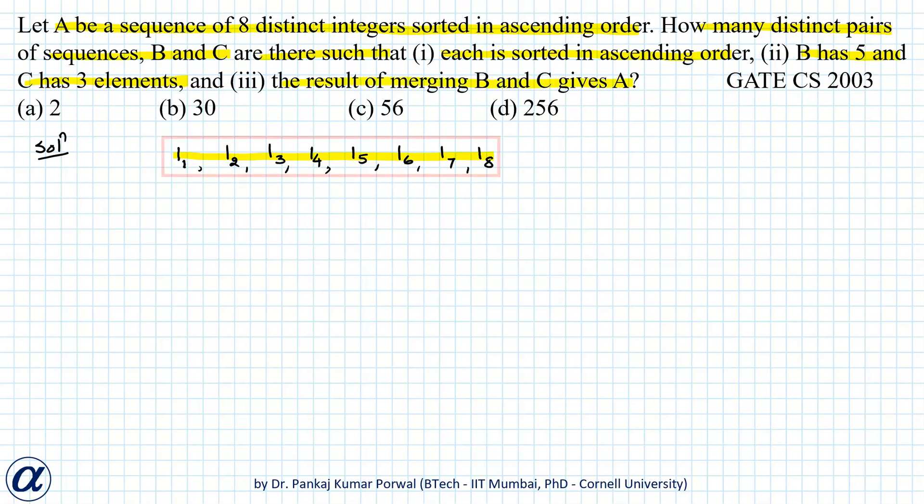That means that each of these eight integers should be part of either sequence B or sequence C. So we have to select sequences B and C out of these eight integers without repetition. So the number of ways of selecting five integers out of these eight distinct integers will be C8, C5.